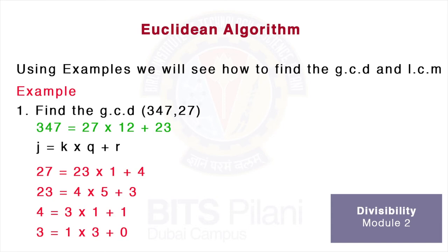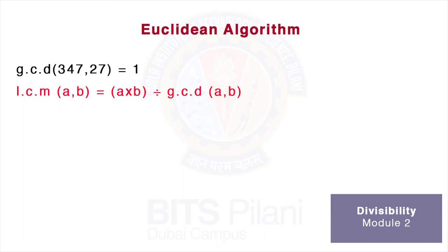This gives us the GCD of 347 and 27 is equal to 1.